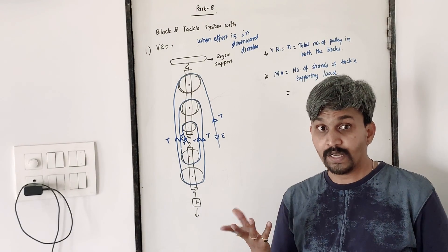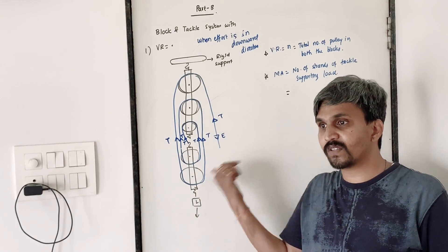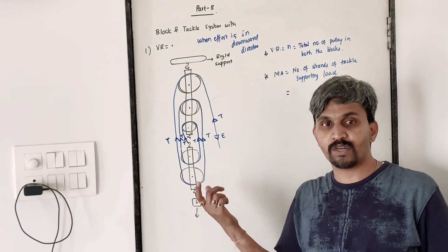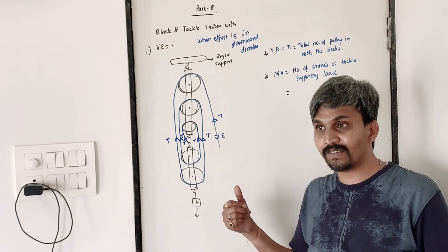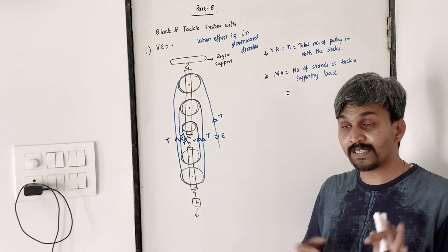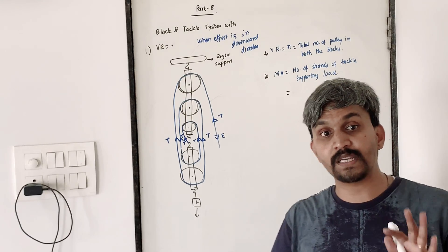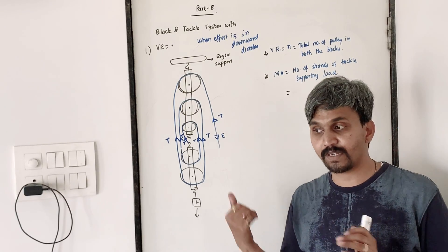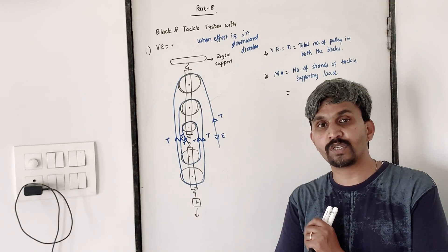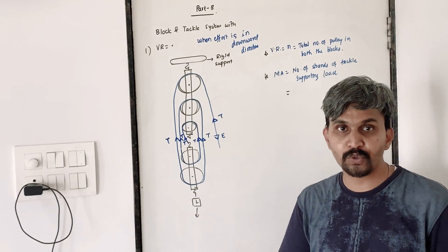If effort is in upward direction, then your MA and VR will each be plus one — whatever number of pulleys plus one, whatever number of strands plus one — that you have to consider. That is the last solved numerical of Chapter 3B. That's it for this video; we'll do the next video about the numericals of this chapter. Thank you.